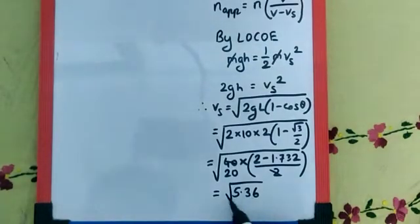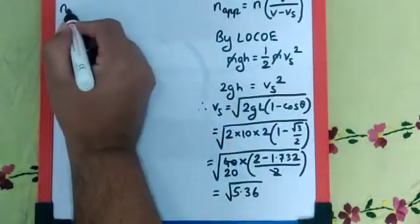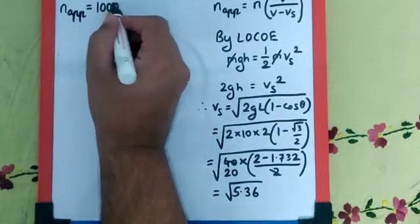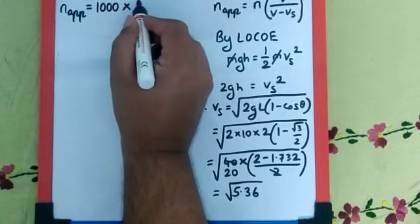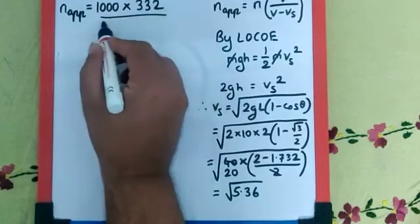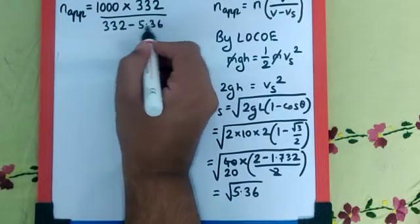Now we need to substitute this root of 5.36 in this formula. So we get N apparent is equal to N which is original 1000 into V velocity of sound in air is 332 upon it is 332 minus root of 5.36.